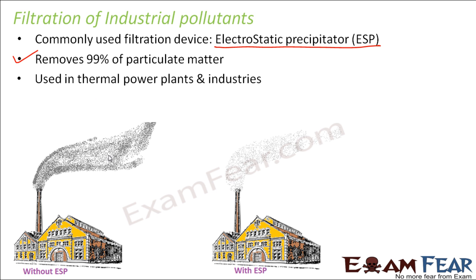If you look at thermal power plants or industries and compare industrial emission from two cases — in the first case without electrostatic precipitator, the emission is all black, full of particulate matter, smoke, and harmful gases. In the second case with ESP, the electrostatic precipitator has removed a lot of particulate matter, so the emission which comes out is comparatively a lot cleaner. We would definitely prefer the second case. That is why it is very, very important to install electrostatic precipitators and similar devices in industries and factories so that we can reduce the harm caused by industrial emissions.